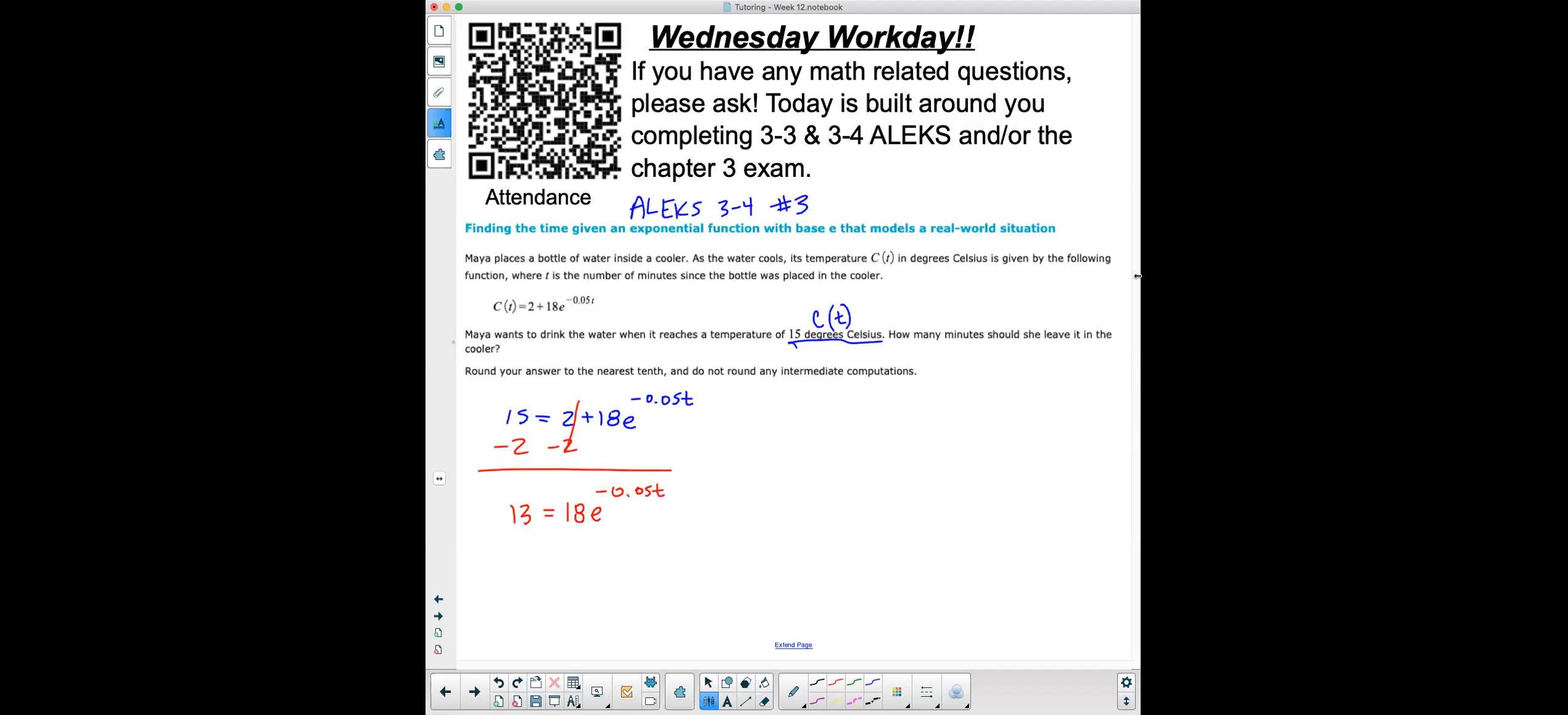And then I would divide by 18, and 18 is multiplying times E, so if I divide, I can get rid of that. And so now I have 13 over 18 equals E to the negative 0.05t.